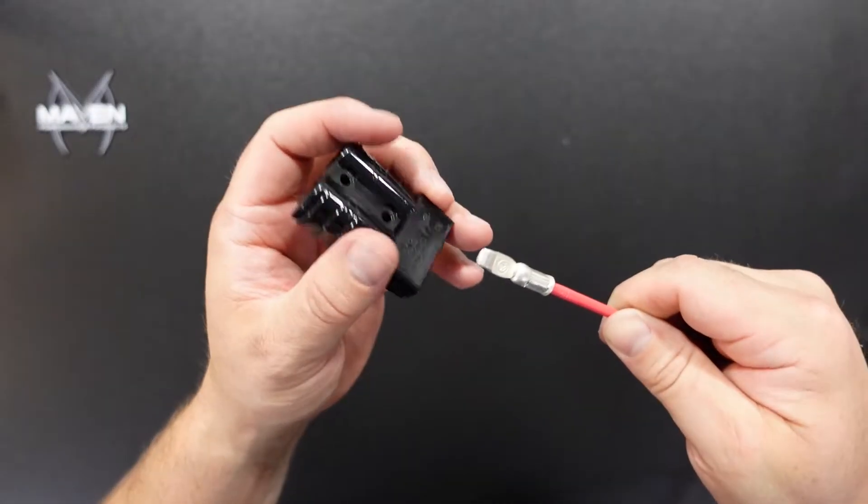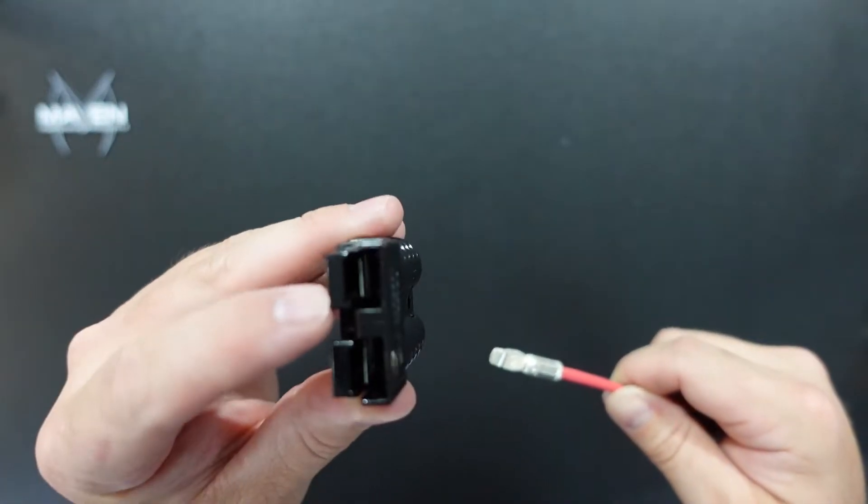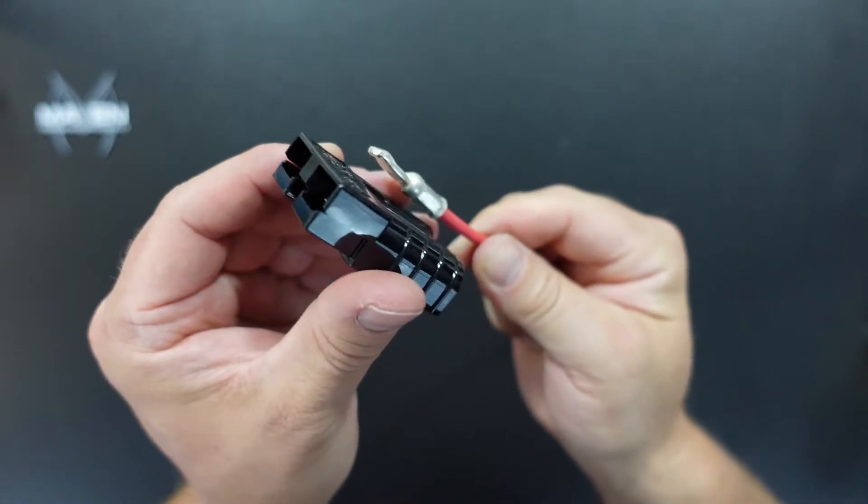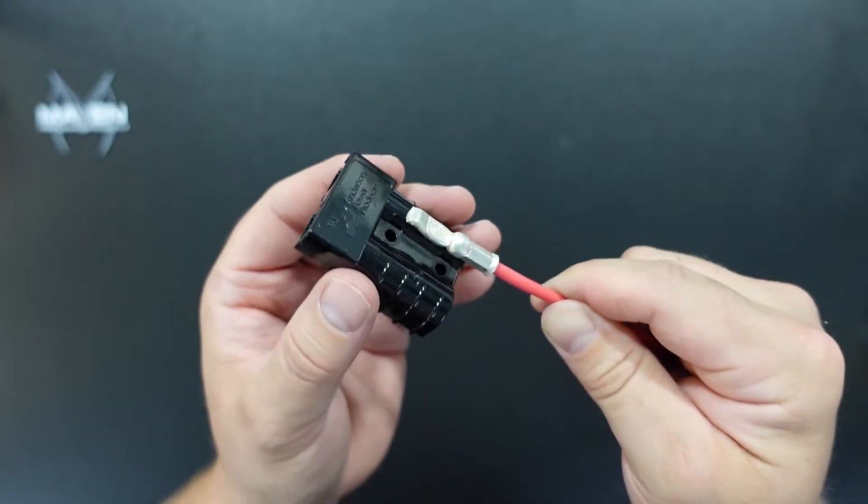Alright, let's go ahead and put this terminal in. You can see this connector here. It's got a little metal tab inside there. This hook shape, I'm going to show it this way, is going to slide in and clip up over that tab. Pretty simple.